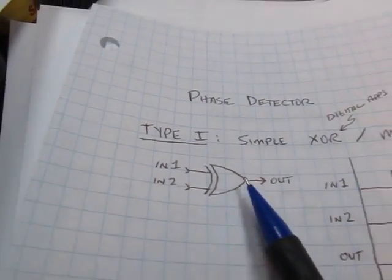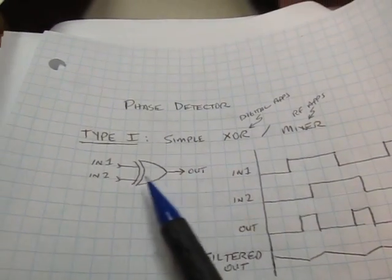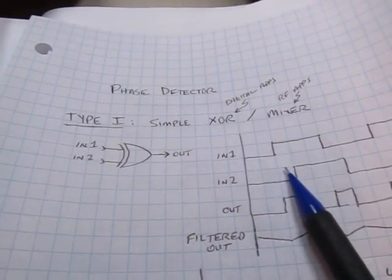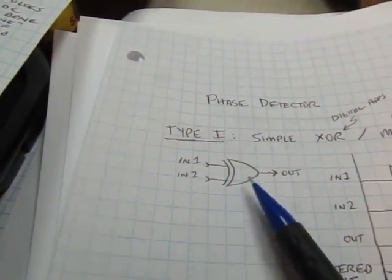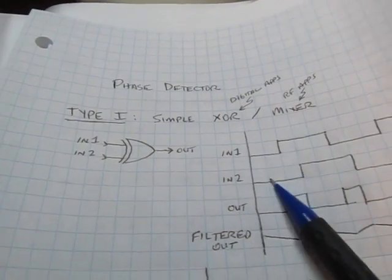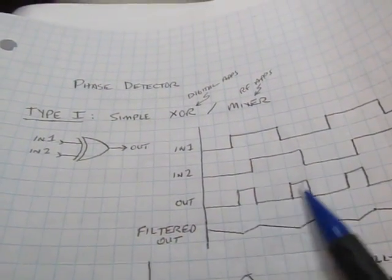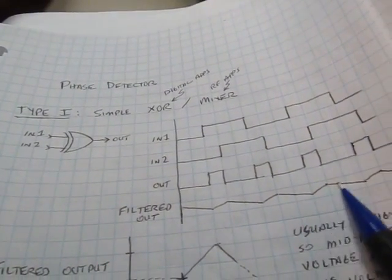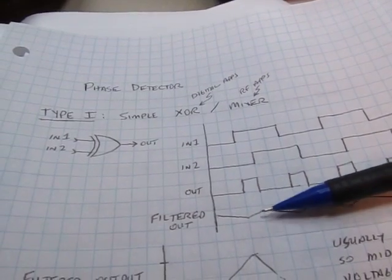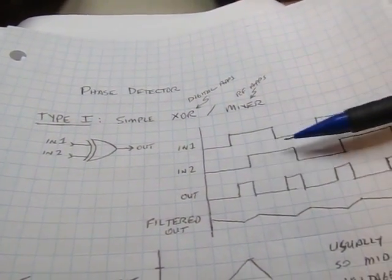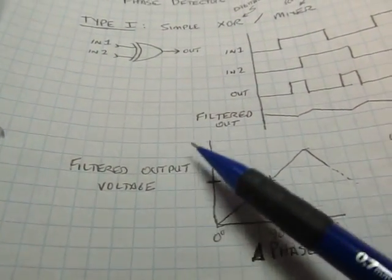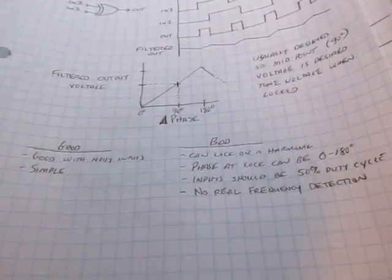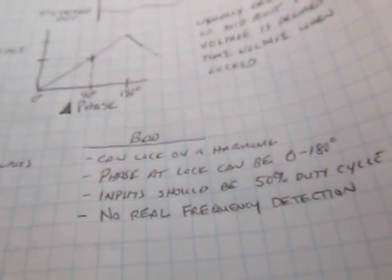If you think about it from an XOR case: if the two signals were perfectly lined up, the two inputs would never be different and the output would always stay at zero. Whenever the input voltages are different, we get a pulse out of the output — that's how exclusive OR works. If N1 is leading N2 in terms of phase, we're getting this pulse out, and if we filtered that, we'd get a voltage that varies from ground to VCC depending on what the phase difference is. The filtered voltage output is proportional to the phase difference of the input.